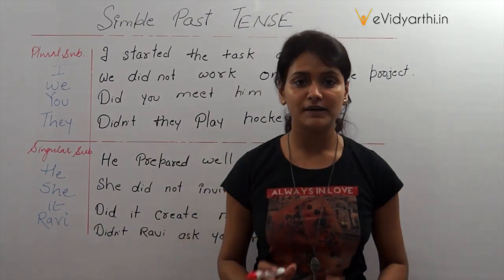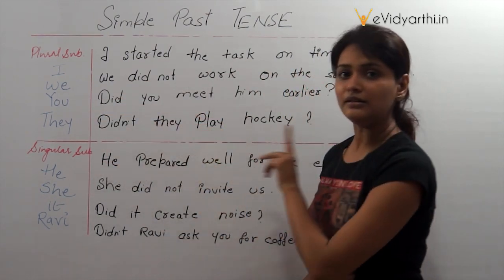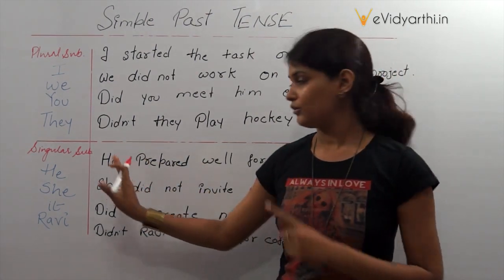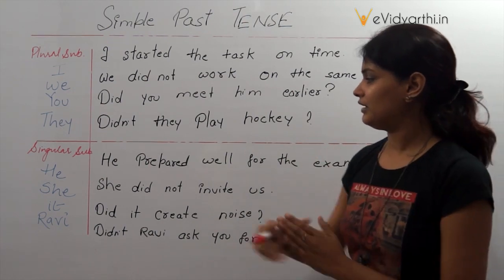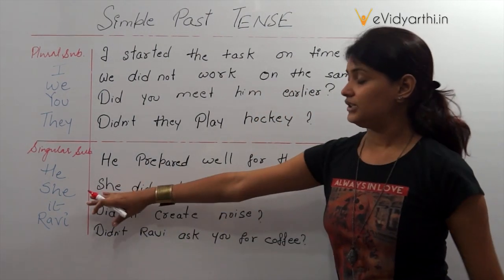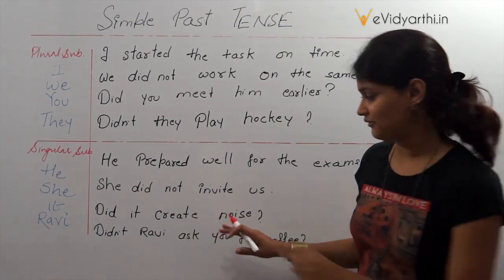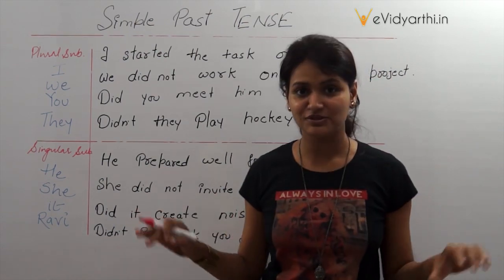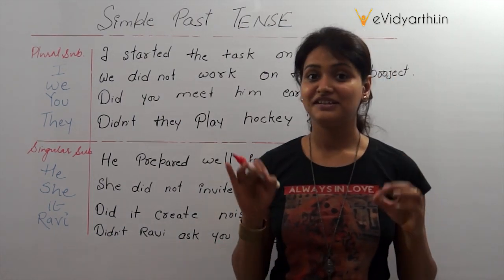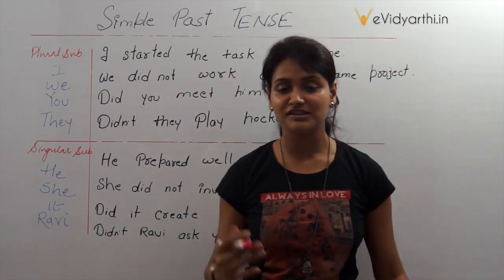When it is a singular subject in simple past tense — no different rules, as I said. We use the same auxiliary verb, that is 'did'. Taking the positive sentence: 'He prepared well for the exams.' Second form of the verb because there is only the subject. He prepared well for the exams. For the negative: 'She did not invite us.' When there is 'did', we use the first form of the verb. She did not invite us. Coming to asking a question: 'Did it create noise?' — first form of the verb. And: 'Did Ravi ask you for coffee?' — 'ask' is the first form of the verb because 'did' is at the head of the sentence.